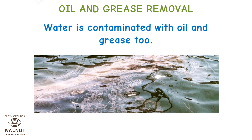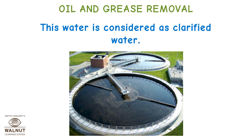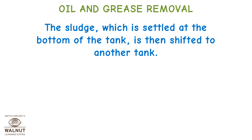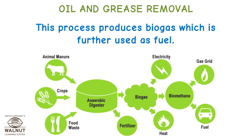Oil and Grease Removal: Water is also contaminated with oil and grease. A skimmer removes the oil and grease from the water, and this water is then considered clarified water. The sludge settled at the bottom of the tank is shifted to another tank, where it is decomposed by anaerobic bacteria — a process that produces biogas, which is further used as fuel.